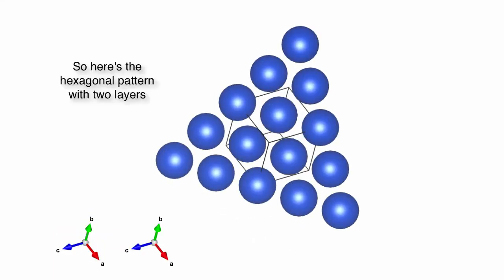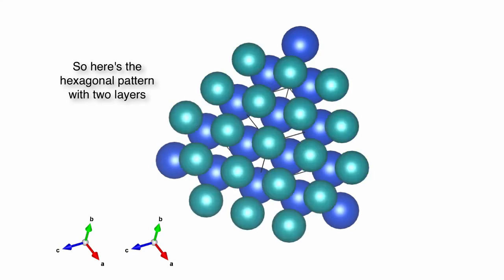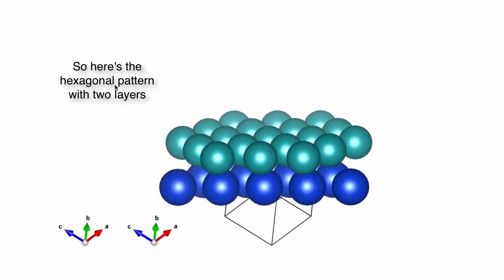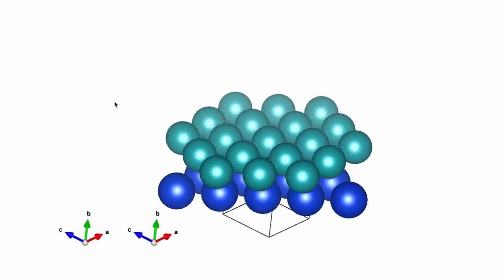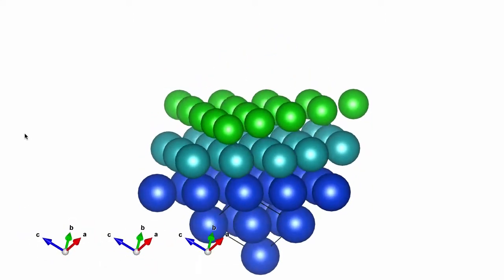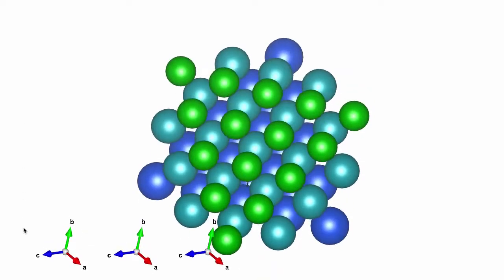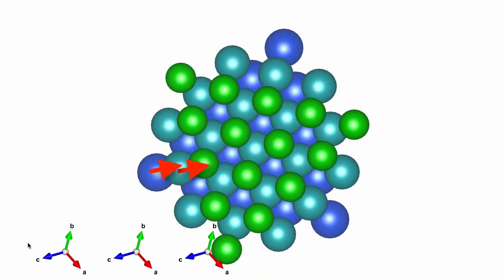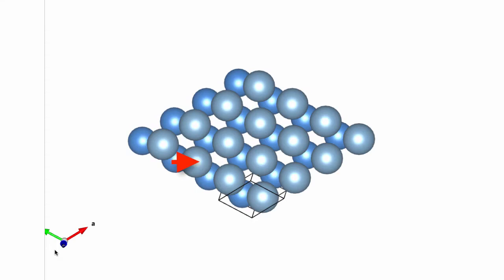Yeah. And not only that, but the hexagons look like they're shifted. And that's the stacking I was talking about. There's a shift sideways between the layers, so we call that ABC stacking. The other stacking is simply AB stacking.